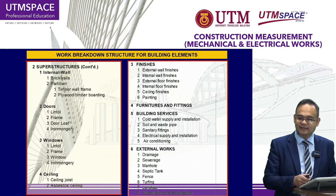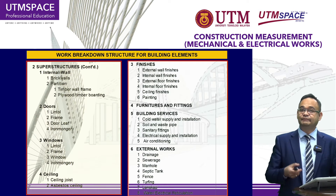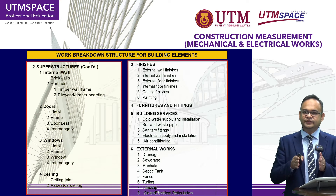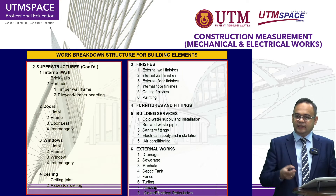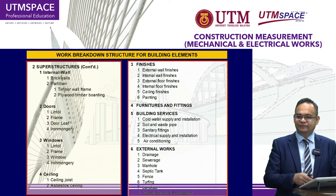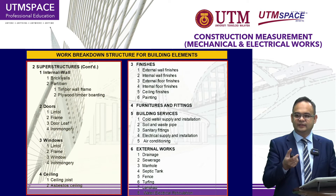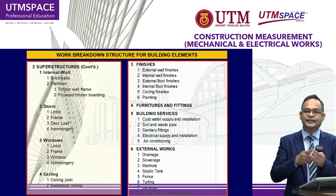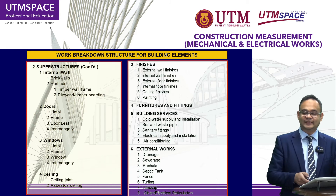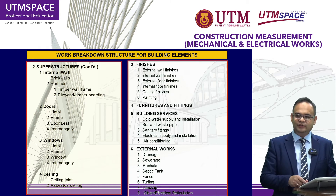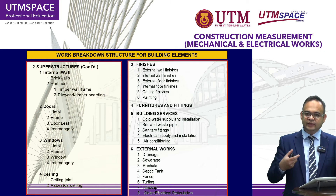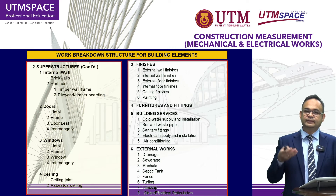Number four is furniture and fittings. Number five is building services, which is our main objective for this module — we are focusing on building services or engineering services in building. Based on our research, number five is not just the basic building services work; based on our observation and study, nowadays there are about 43 engineering services works in building, especially for intelligent and smart buildings. Number six is external works. In the next module, we are going to discuss one by one each engineering services in building, and hopefully you can understand the importance of engineering services measurement.